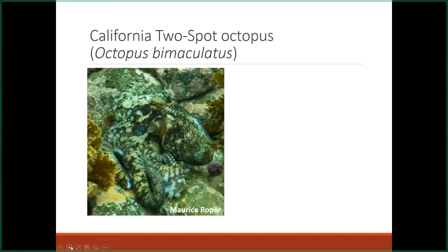But the octopus we're focusing on today is the California Two-Spot Octopus, or Octopus bimaculatus. It's named for these eye spots that you can see. Here are the eyes right here, but you see this blue spot right here? There's a blue circle on each side of its head. Those are called ocelli or eye spots.